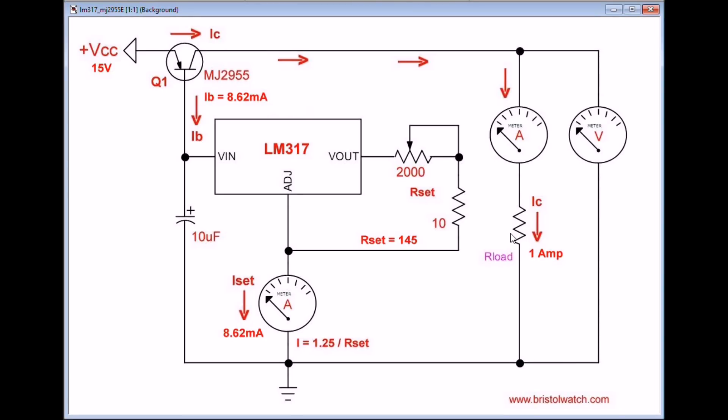At our present 10 ohm load at 1 amp current, 10 watts will be dissipated by the load. 5 watts will be dissipated by Q1.